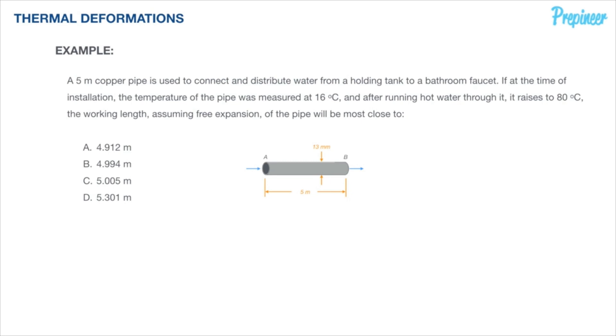This problem states a five meter copper pipe is used to connect and distribute water from a holding tank to a bathroom faucet.